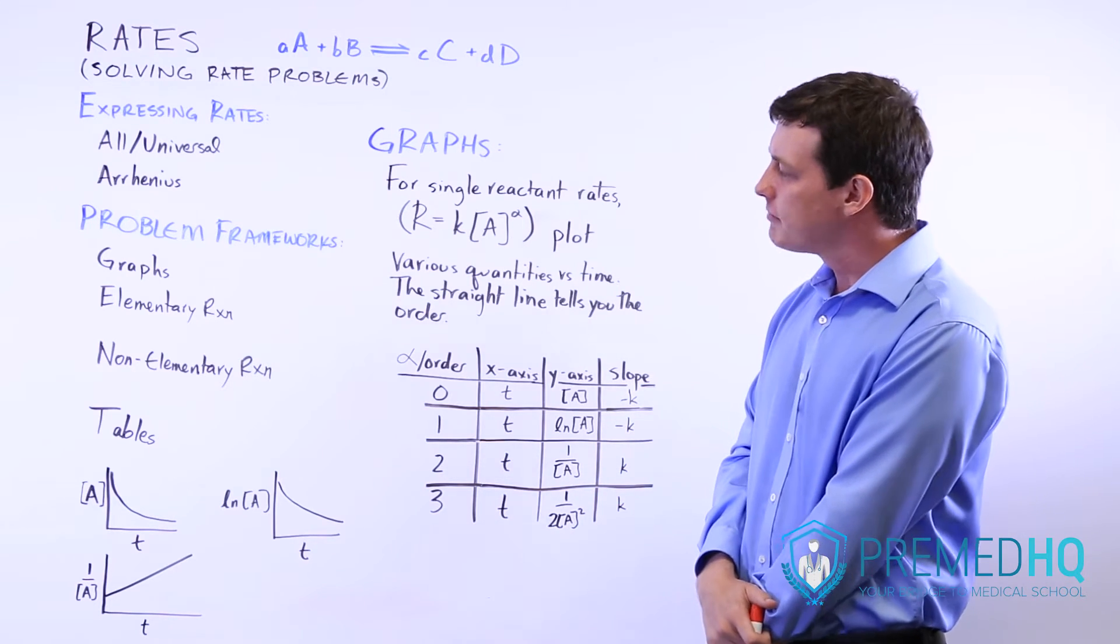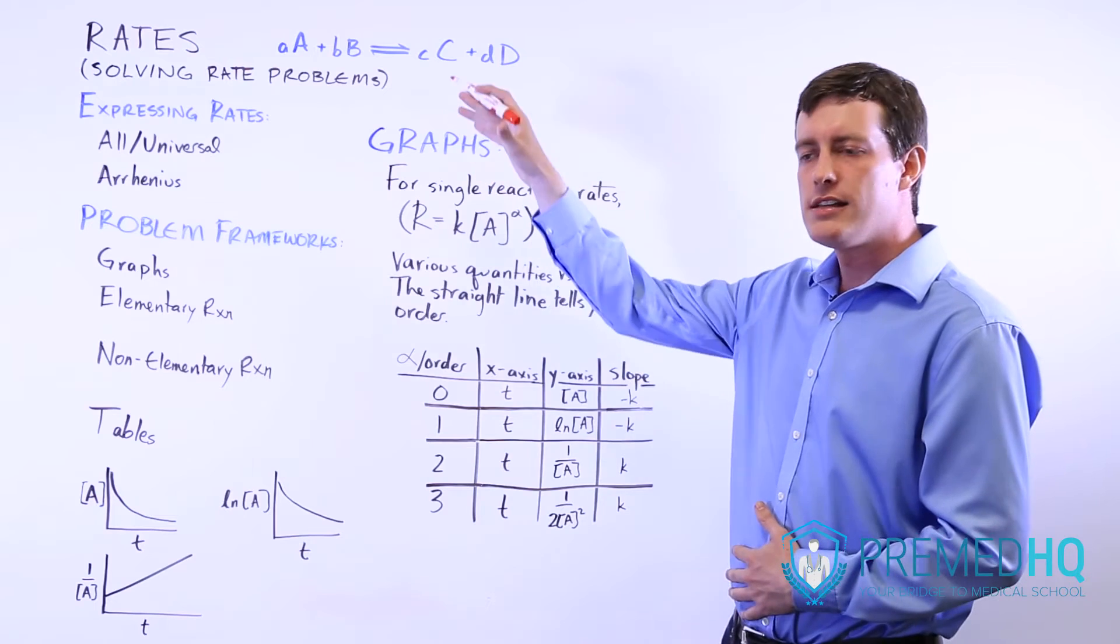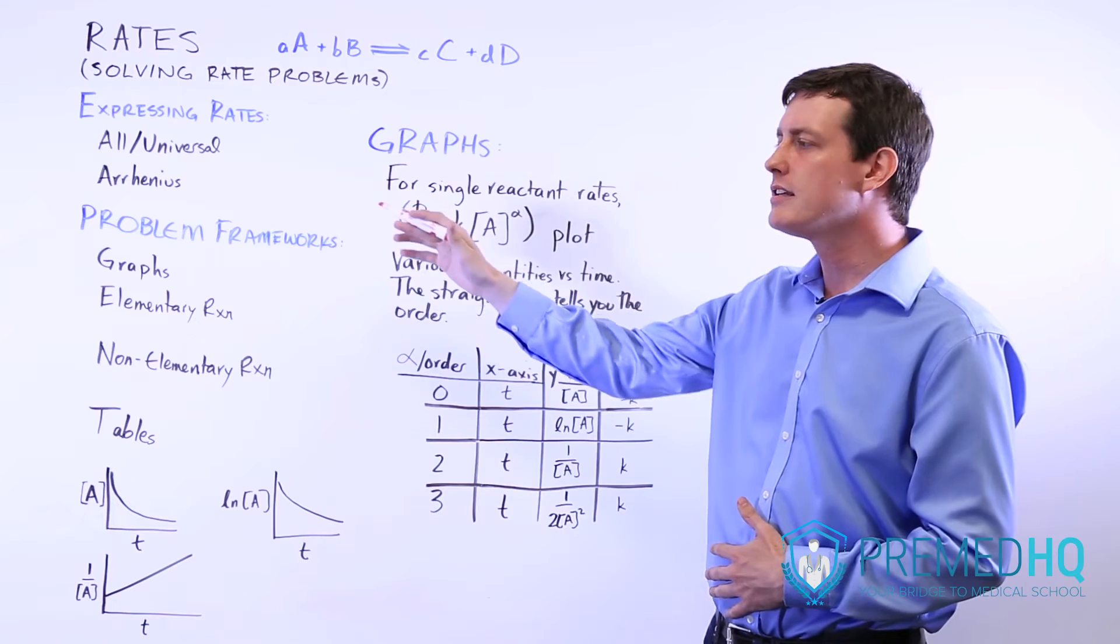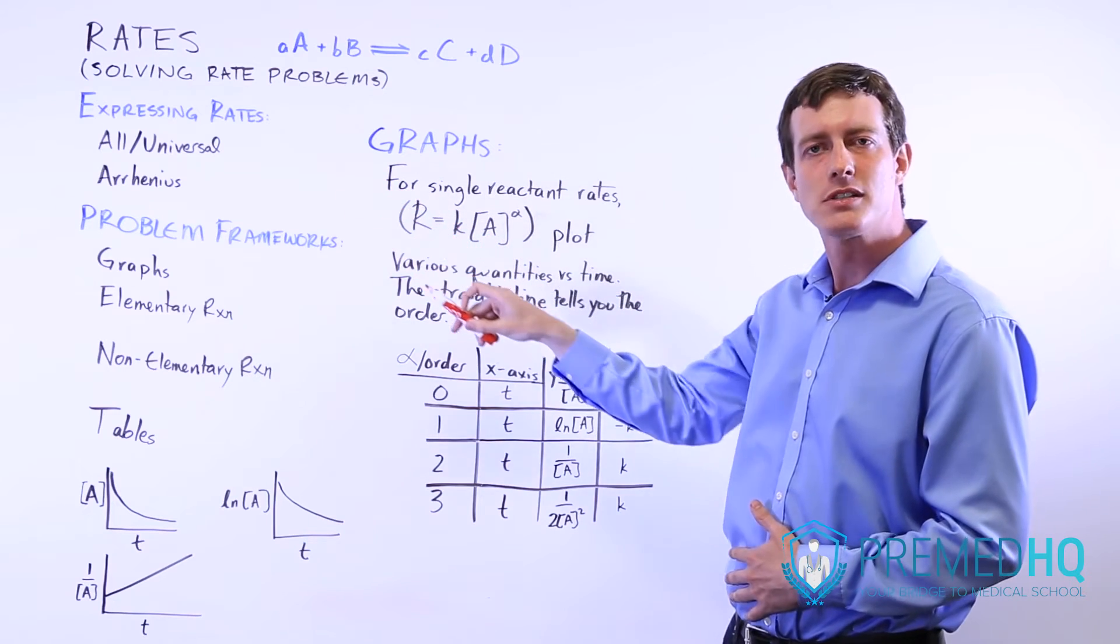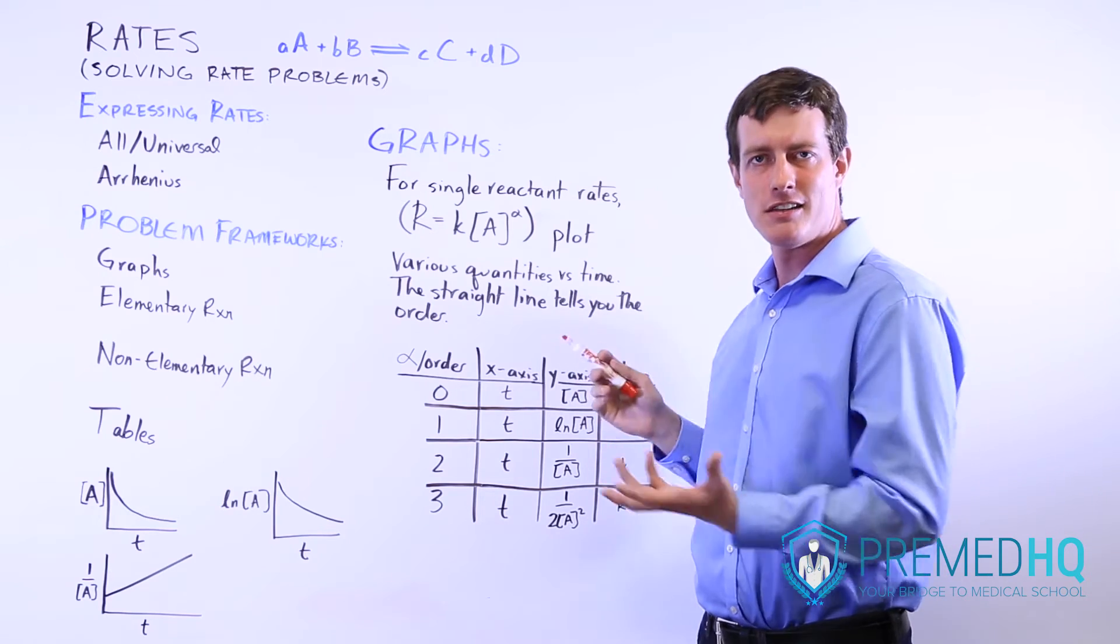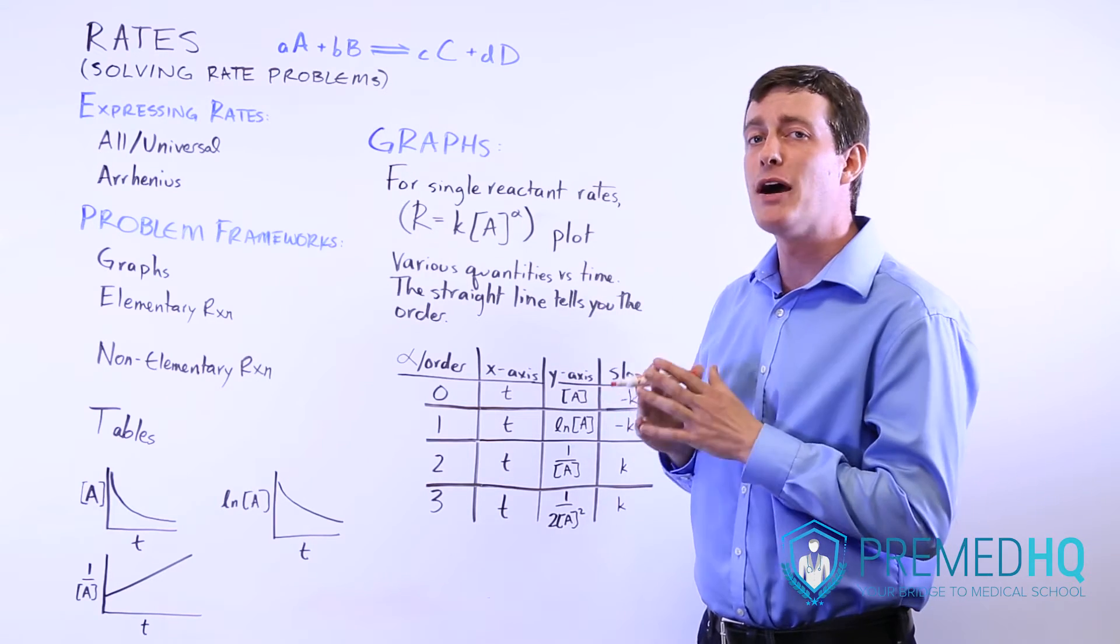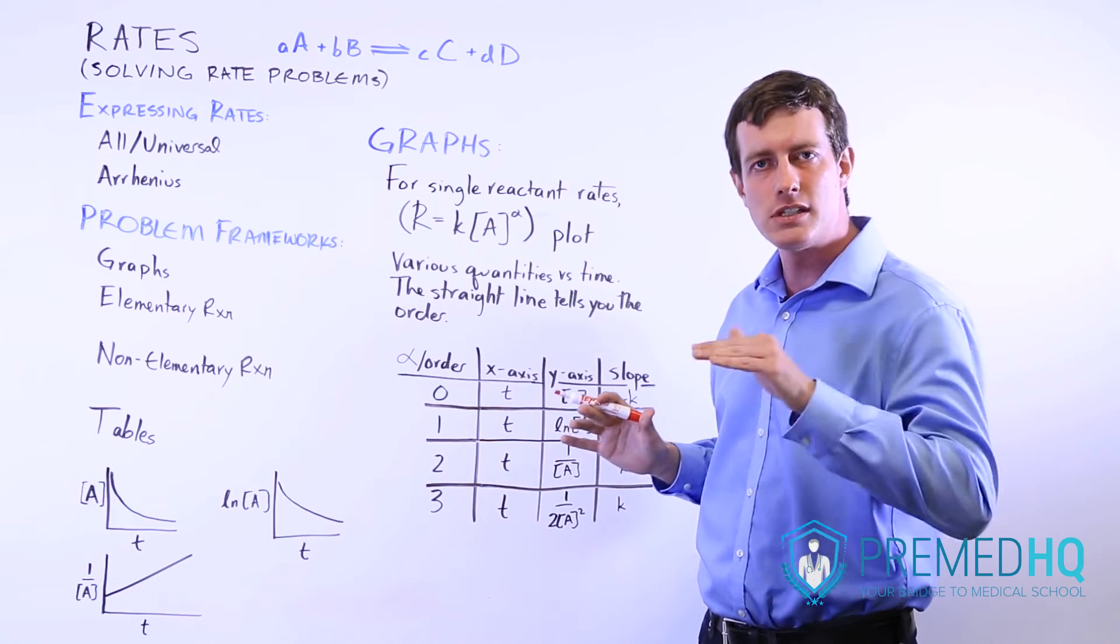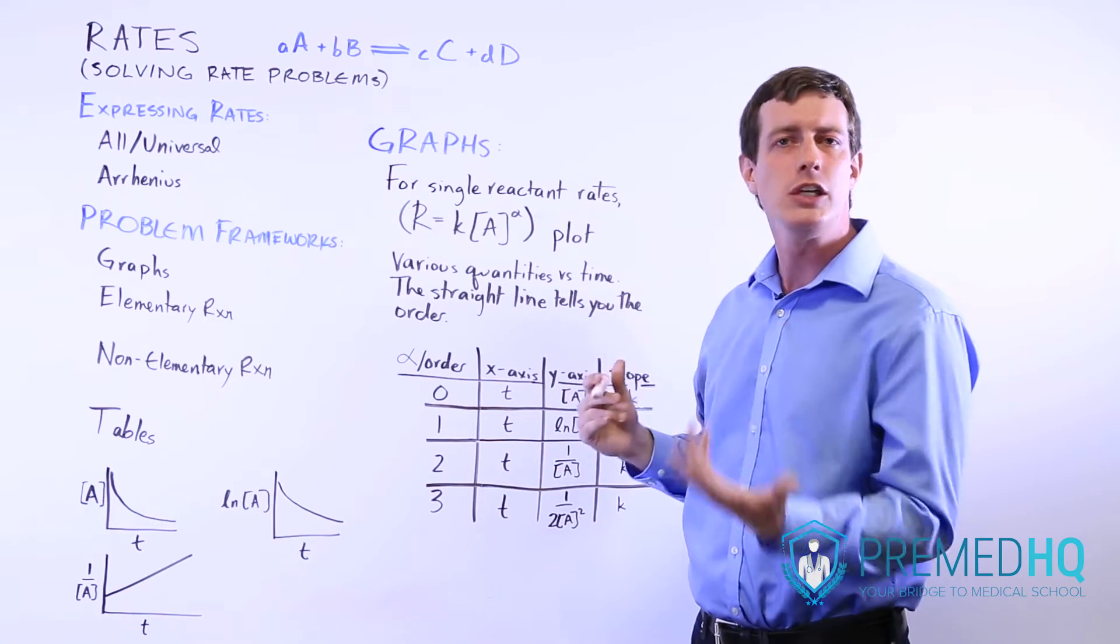And that kind of makes sense, because if you were to plot the quantity of something versus time, and you notice that it depleted the quantity the same amount as time went on, independent of how much of A there was, that would mean that the amount of A had no impact on the rate of the reaction. It was just consistently moving forward and using up that A.